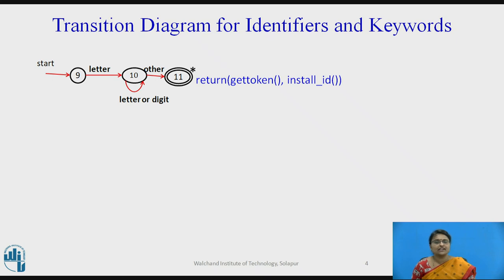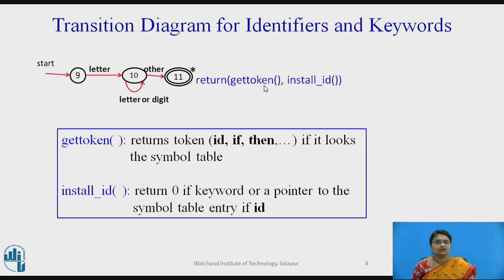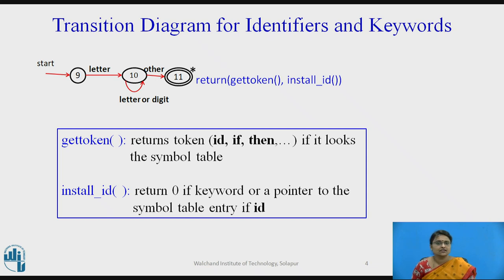The next transition diagram is for identifiers and keywords. An identifier or keyword starts with a letter and may be followed by letters or digits. The diagram accepts these and returns two things: it calls a function called getToken, which returns ID if it is an identifier, or the keyword itself if it is a keyword. The installID function returns 0 for keywords since there is no symbol table entry needed, but for identifiers it makes an entry in the symbol table if not already present and returns a pointer to it.